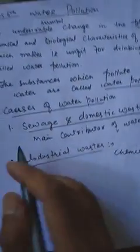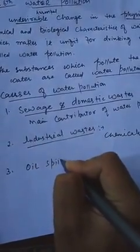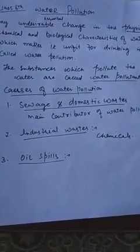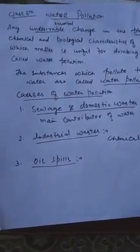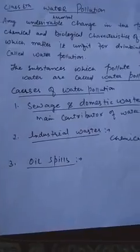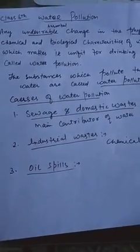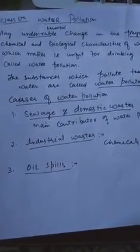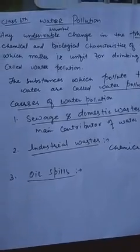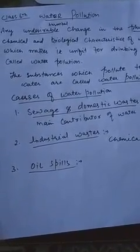The third cause of water pollution is oil spills. Oil spills are oil leakages — for example, when we transport oil across the ocean, sometimes accidents happen and oil goes into the ocean. This oil spreads on the surface of the water, blocking oxygen from entering. When oxygen is depleted, microorganisms die. When microorganisms like phytoplankton and zooplankton die, larger organisms such as fish and turtles also die.